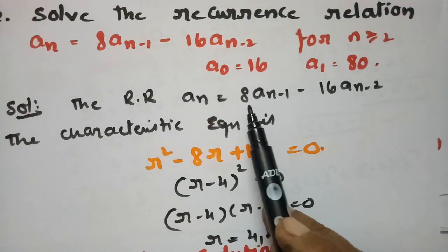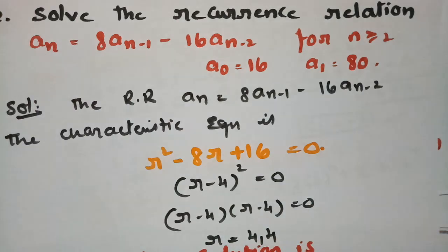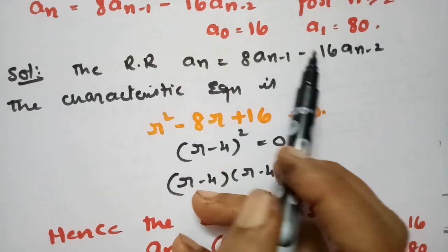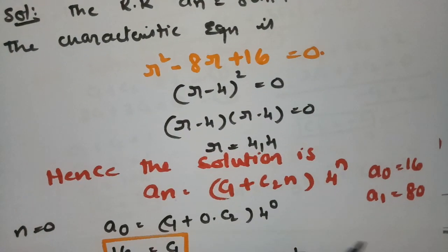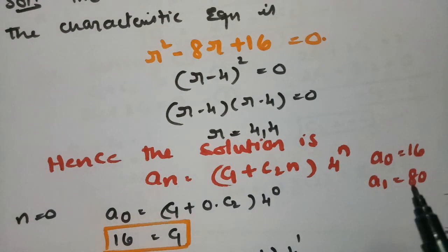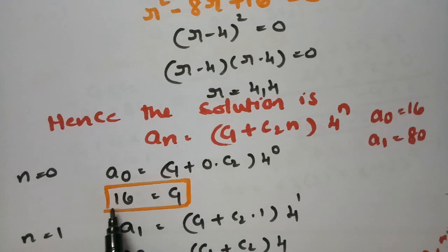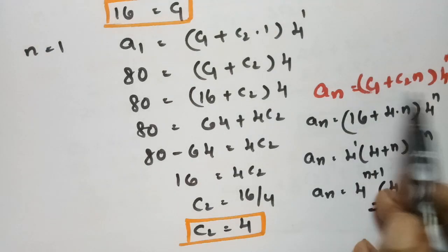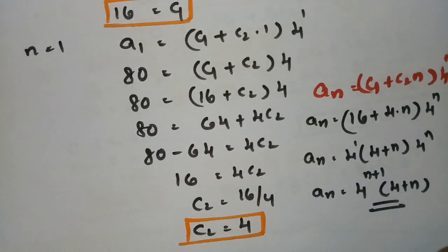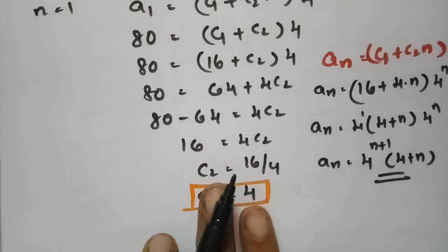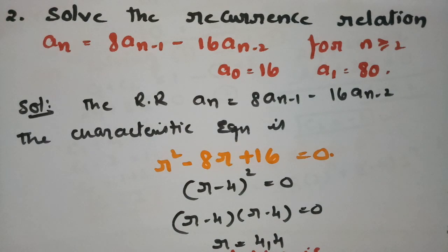To summarize problem 2: the recurrence relation is An = 8·An-1 - 16·An-2; characteristic equation R² - 8R + 16 = 0 gives equal real roots R = 4; solution is (C1 + C2·N)·4^N; with A0 = 16 and A1 = 80, we get C1 = 16 and C2 = 4, giving the final solution. Thank you for watching. The next video will cover third-order homogeneous recurrence relations.